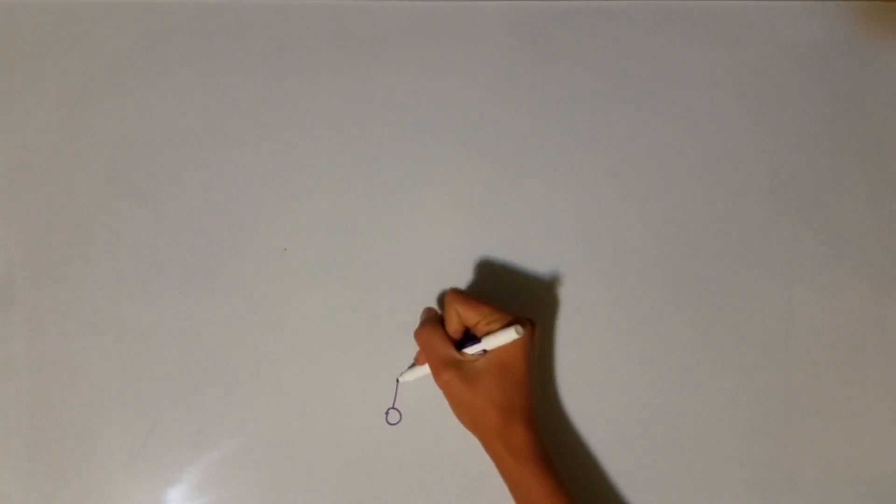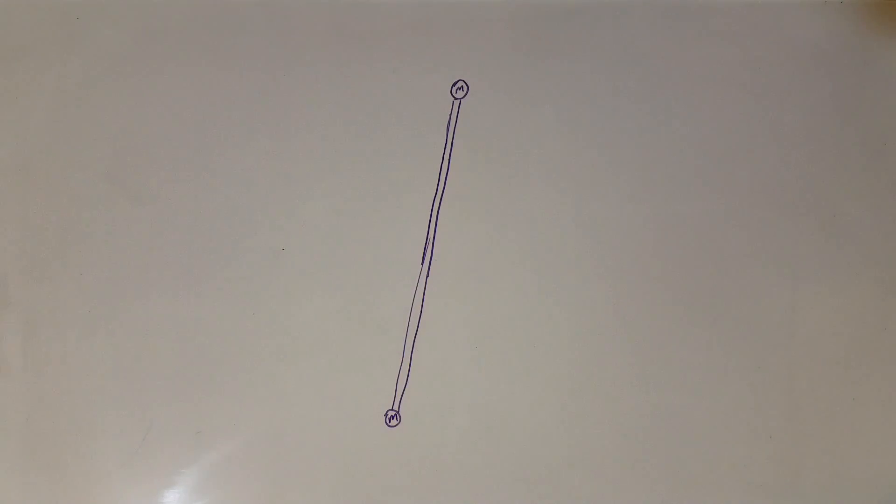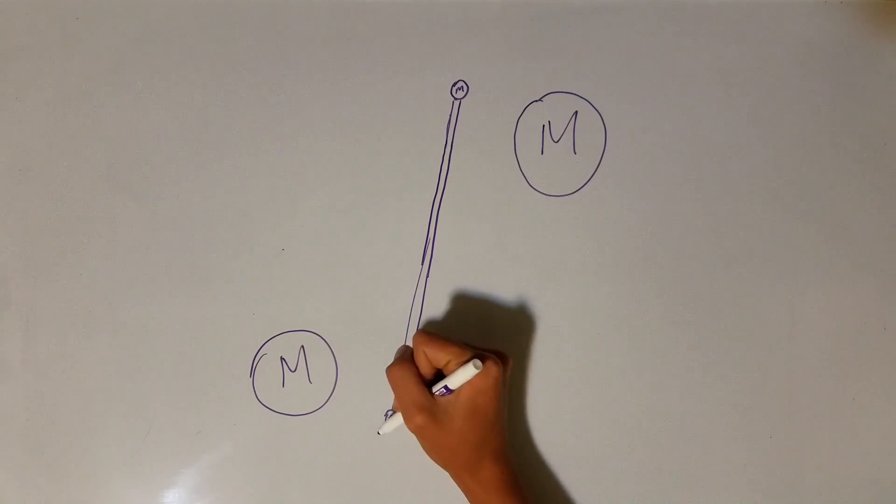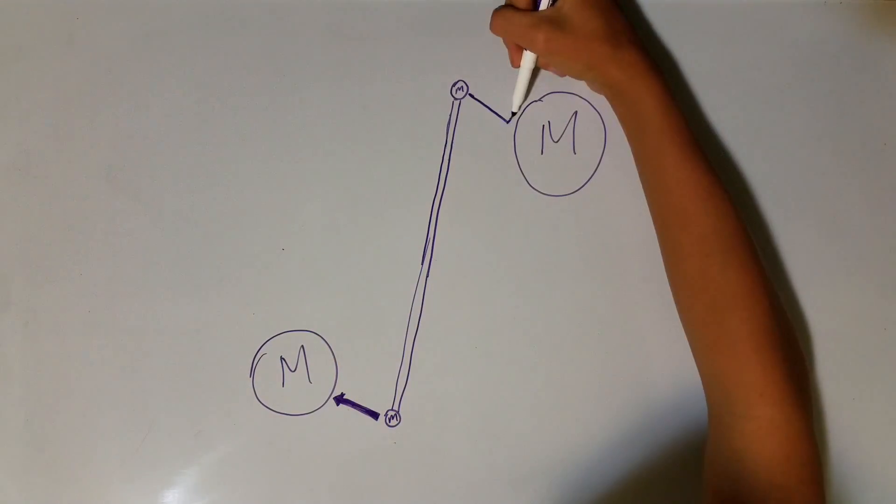So, in Cavendish's experiment, friction has been almost entirely removed. Now, the small balls are free to move towards the larger ones causing the rod to turn and twist the wire.